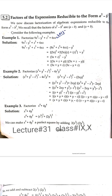The algebraic expressions will be reduced to the a² minus b² form using that formula. As we know, we have discussed factorization of algebraic expressions reducible to the form a² minus b². We recall that the factors of a² minus b² are (a minus b) and (a plus b).